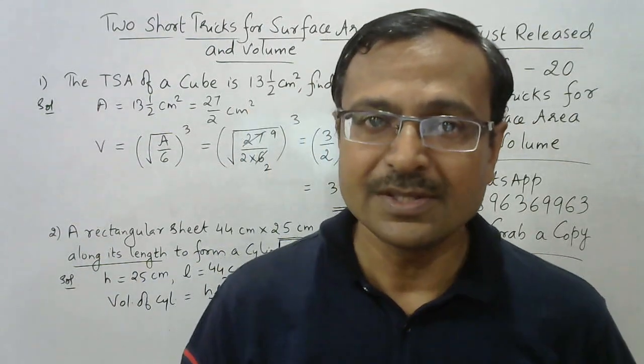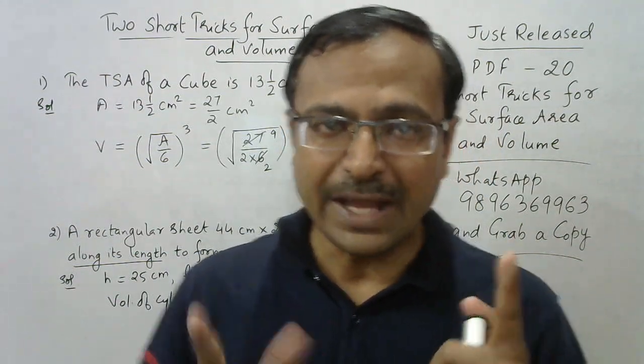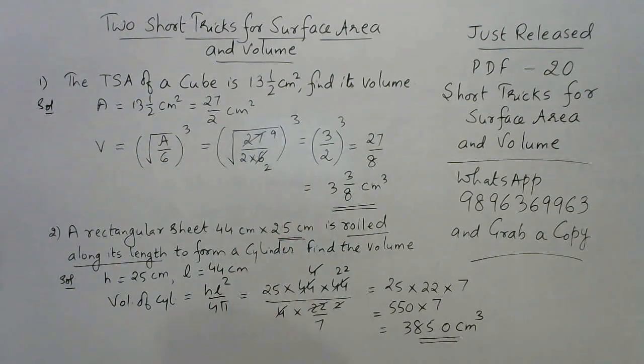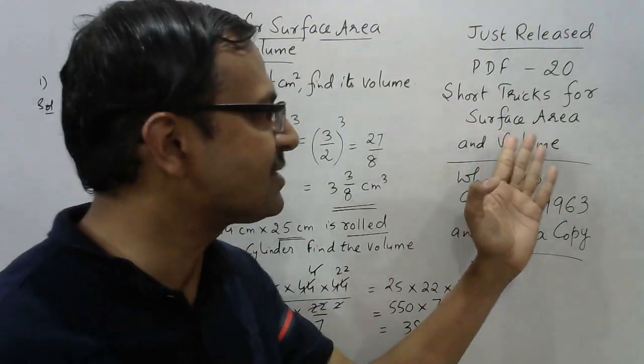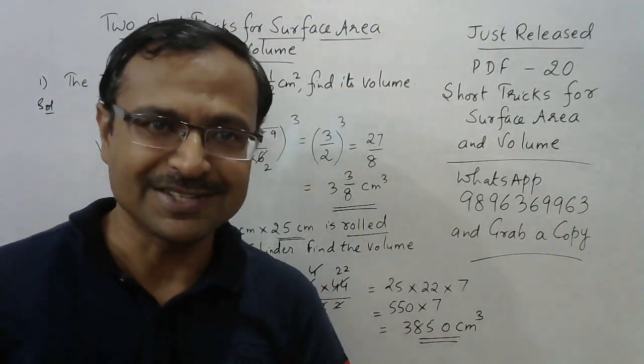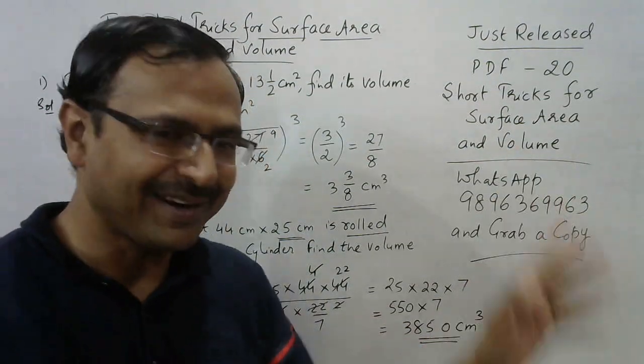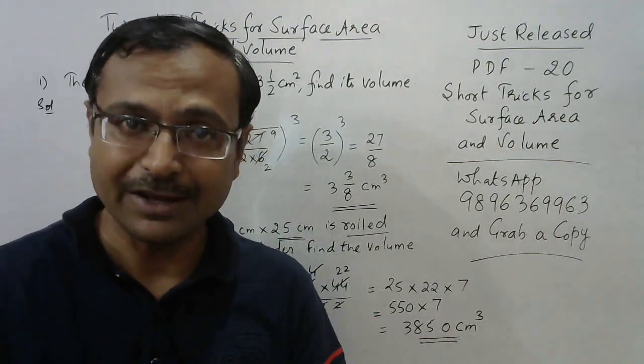If you like this video of surface area and volume short tricks, how many short tricks are mentioned in this particular PDF number 20? There must be somewhere around 25 to 30 short tricks, and that's enough to cover a topic. So get hold of that particular PDF.